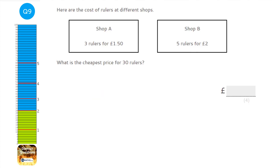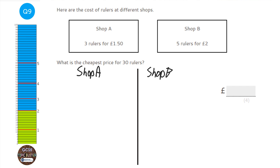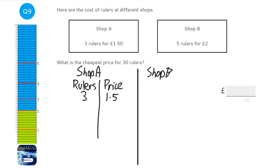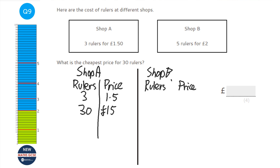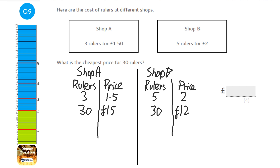For the best value comparison, I put a line down the page: Shop A on one side and Shop B on the other. Shop A: 3 rulers for £1.50 — to get 30 rulers, times by 10 — so £15. Shop B: 5 rulers for £2. To get 30 rulers, times by 6 — so £12. The cheapest price for 30 rulers is £12 at Shop B.